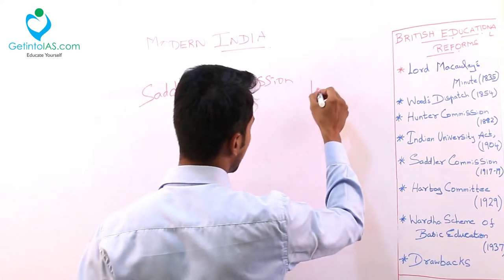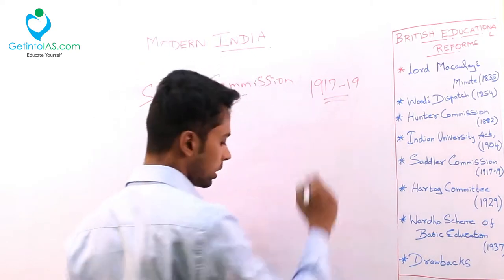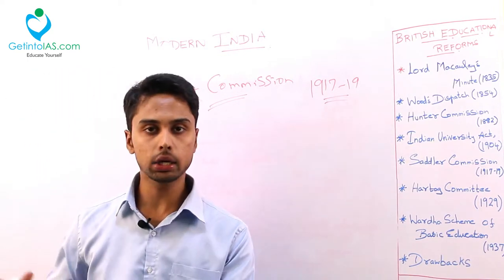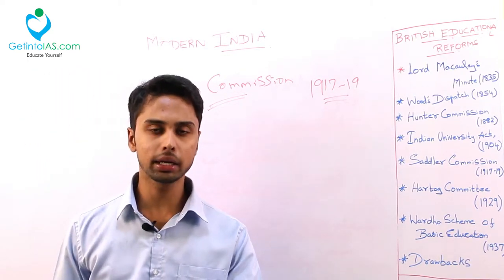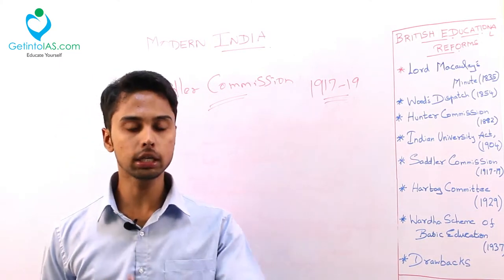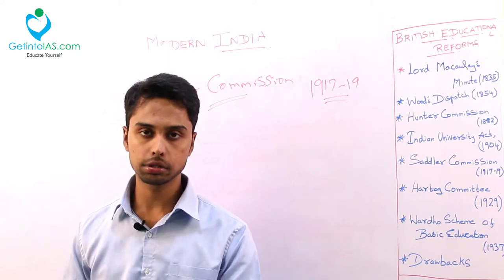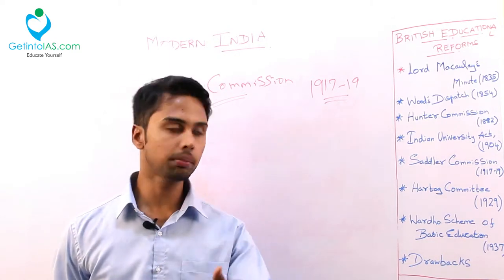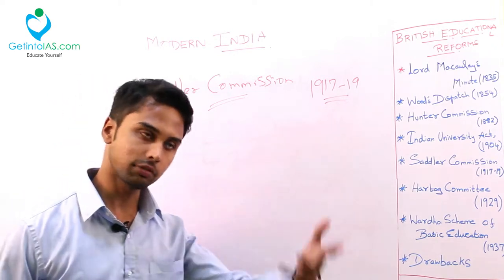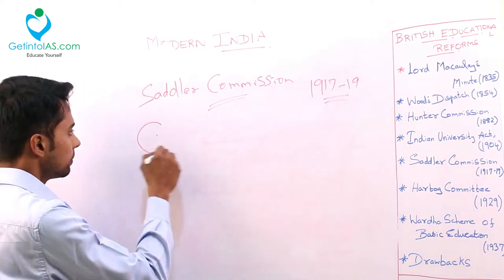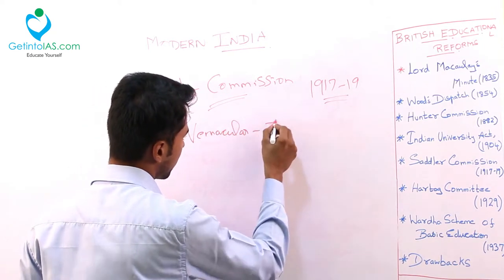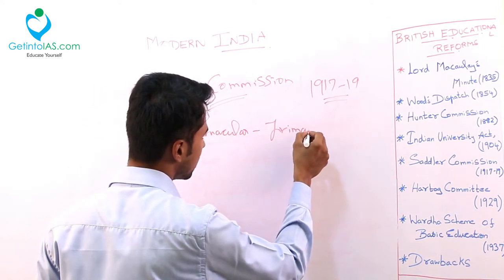Next is the Sadler Commission in the year 1917 to 1919. The main mandate of this commission was to reform the Calcutta University, where there were many mismanagements happening at that time. The committee was set up to take care of the mismanagement in Calcutta University. But the Sadler Commission also gave recommendations about primary and secondary education. He came with a recommendation that vernacular languages should be promoted at the primary level.